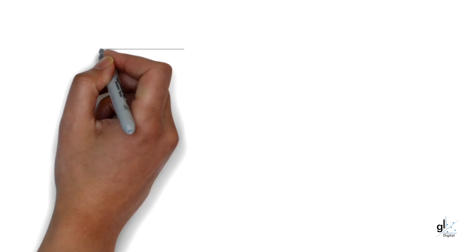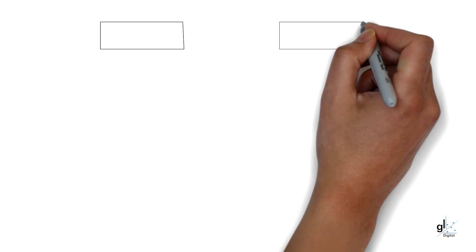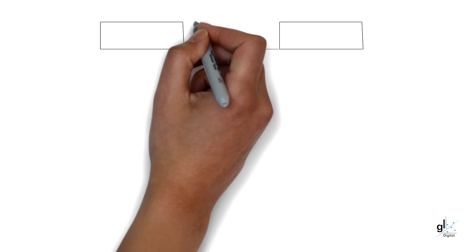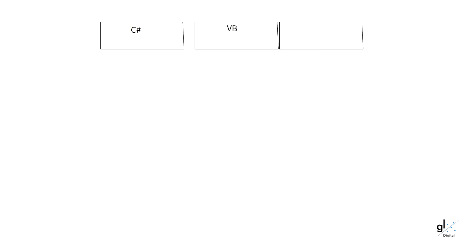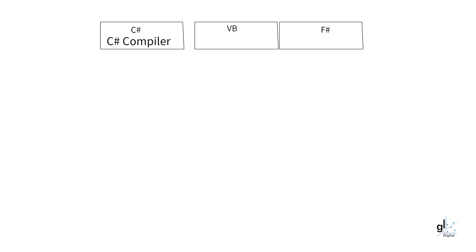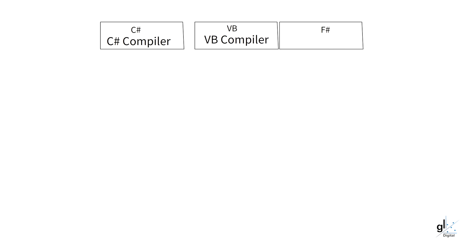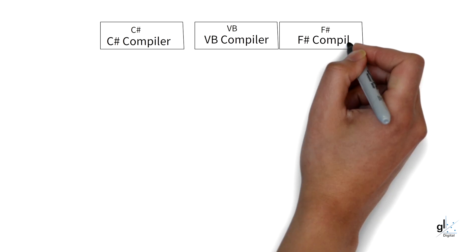How does C-Sharp and .NET basically work? C-Sharp is typically JIT compiled — just-in-time compiled. Note that you can also AOT, ahead-of-time compile, your C-Sharp code, where you can distribute your applications as one executable. But typically, C-Sharp code is just-in-time compiled. The higher-level .NET language — for example, C-Sharp, Visual Basic .NET, or F-Sharp — is first compiled into common intermediate language code.